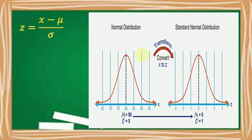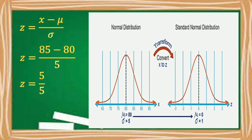In our given figure, the mean and standard deviation are already given in the normal distribution, which are 80 and 5 respectively. For example, our given normal variable x is 85. What would be its corresponding z-score in the standard normal distribution? Applying the formula, we have 85 minus 80 divided by 5. So 85 minus 80 is 5, over 5, which gives us 1. Therefore, the corresponding z-score of the normal variable x, which is 85, is 1.